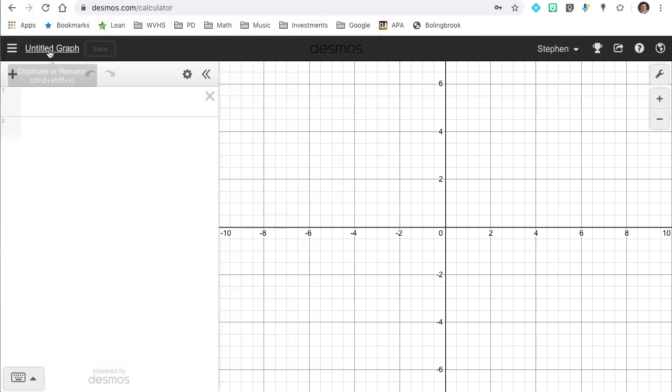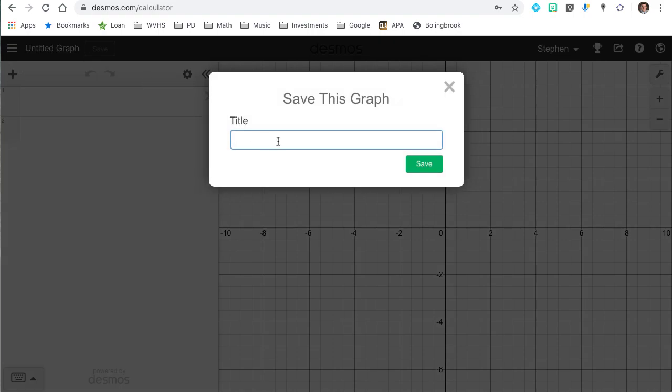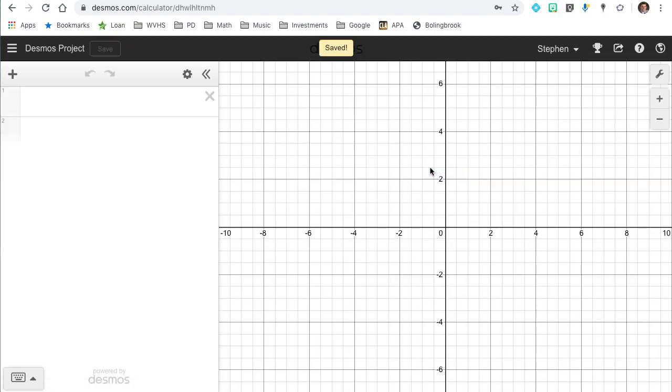And then I would recommend you name your graph. Currently in the top left corner, it will say Untitled Graph. Click that, give your project a name. I'm just going to name mine Desmos Project. Click Save. Throughout your project, you're going to want to make sure you save several times. Any time you close the window, Desmos is nice and will ask you if you want to save your project. Be sure to click Yes if you made significant changes.